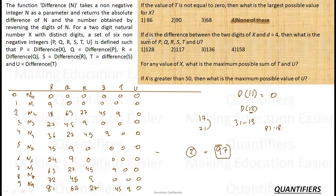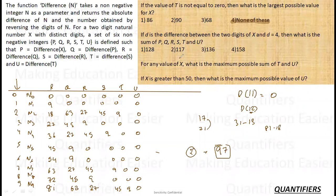Second question: if D is the difference between the two digits of x and D = 4, what is the sum of p, q, r, s, t, u? With digit difference 4: p = 36, q = 63, r = 27, s = 45, t = 9, u = 0. So 36 + 27 = 63, 63 + 45 = 108, and 108 + 9 = 117. The sum is 117.